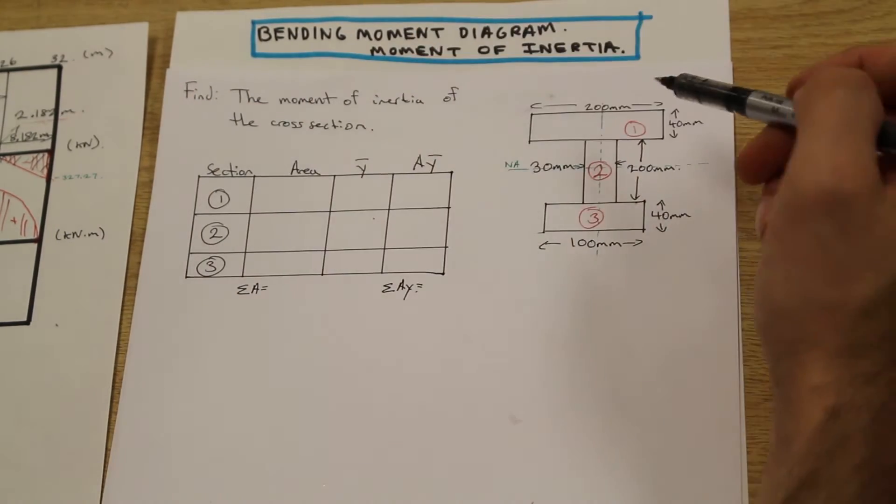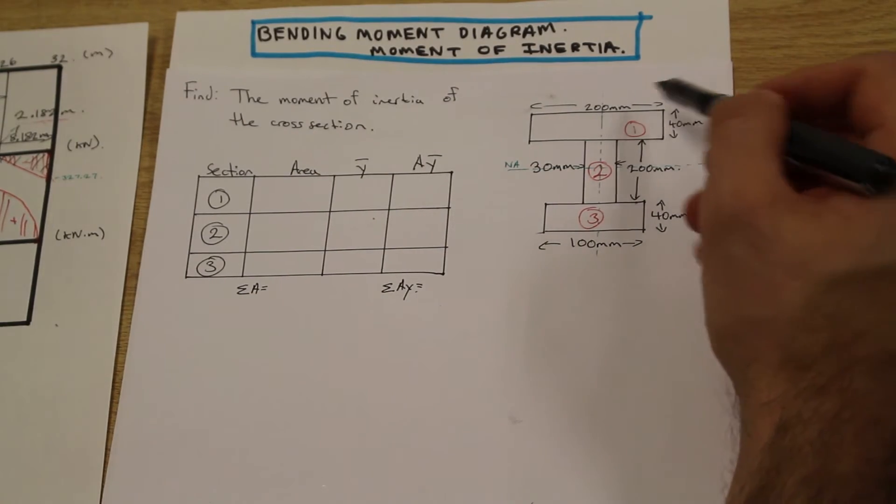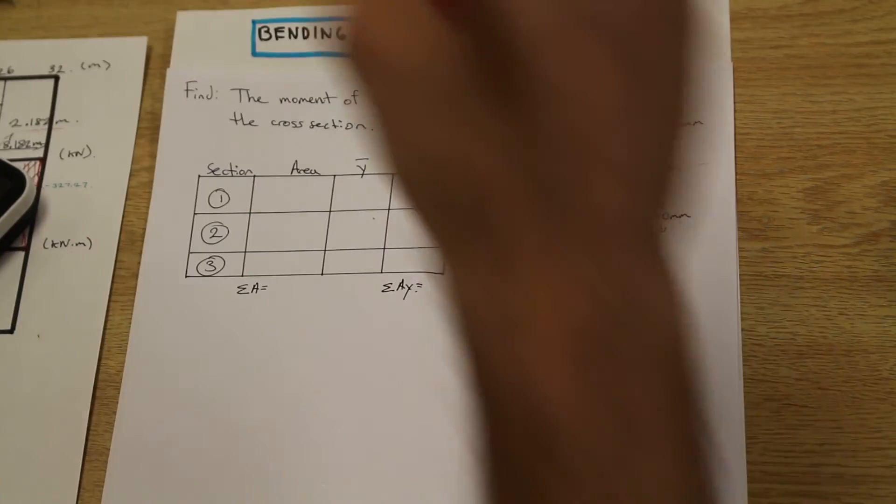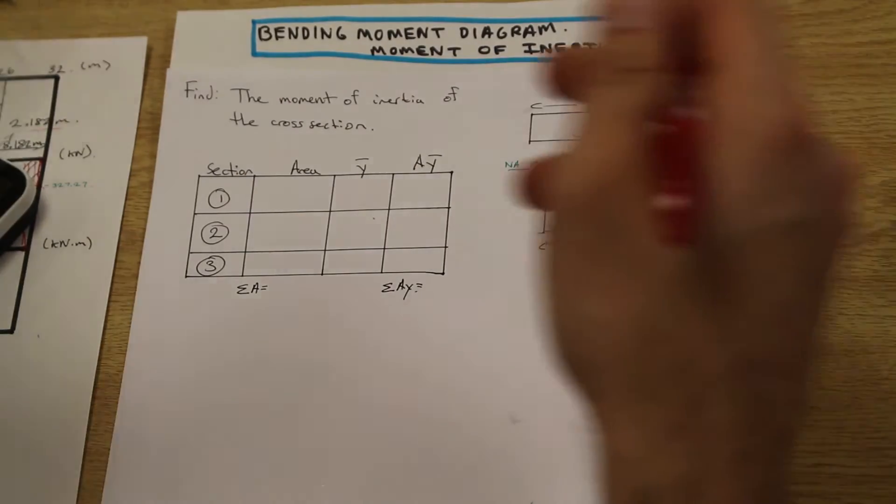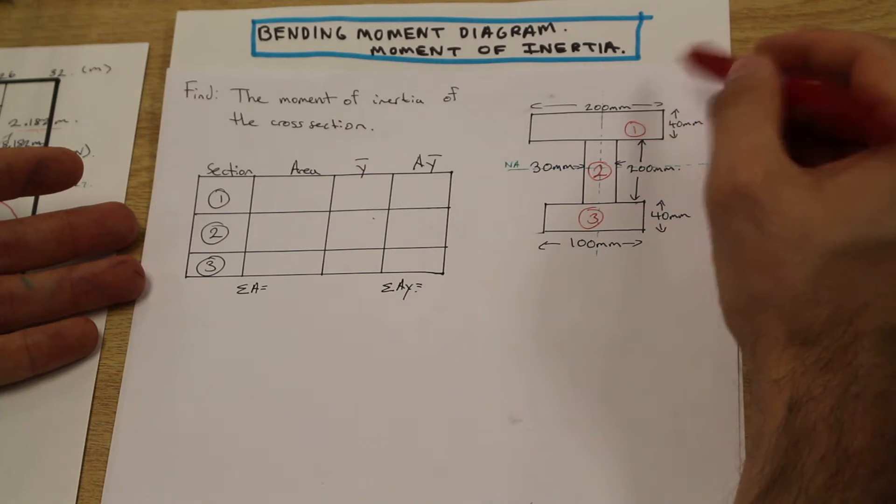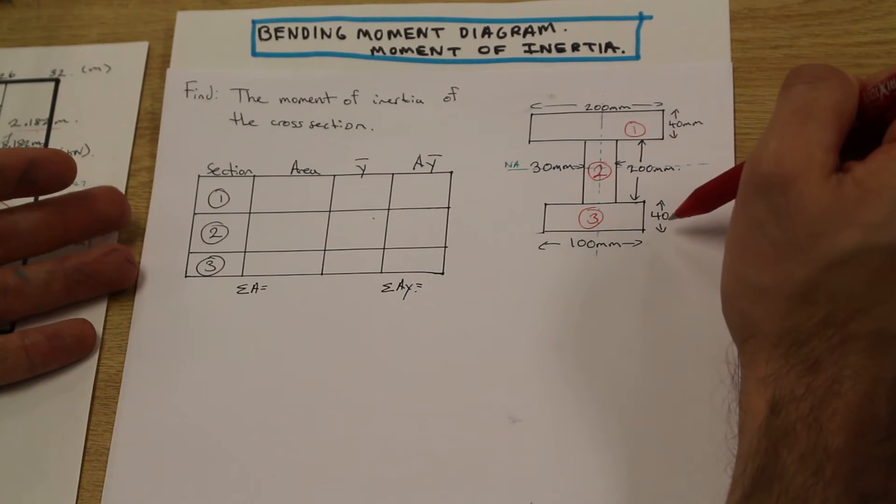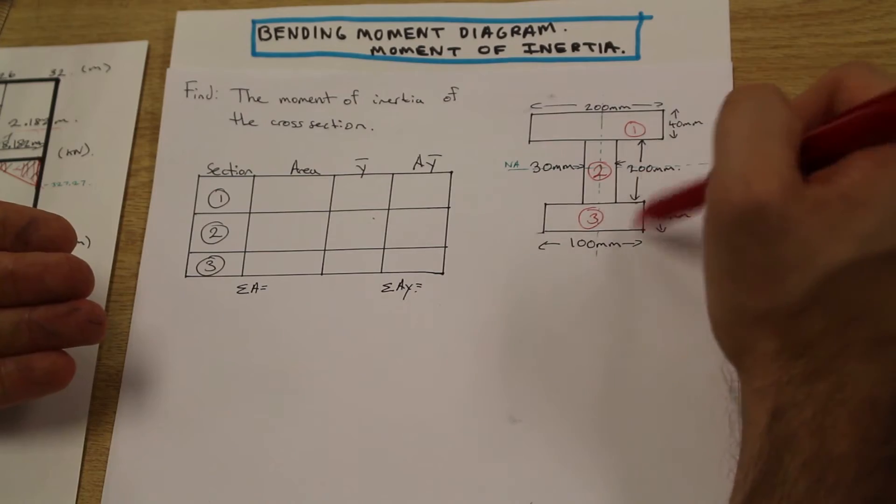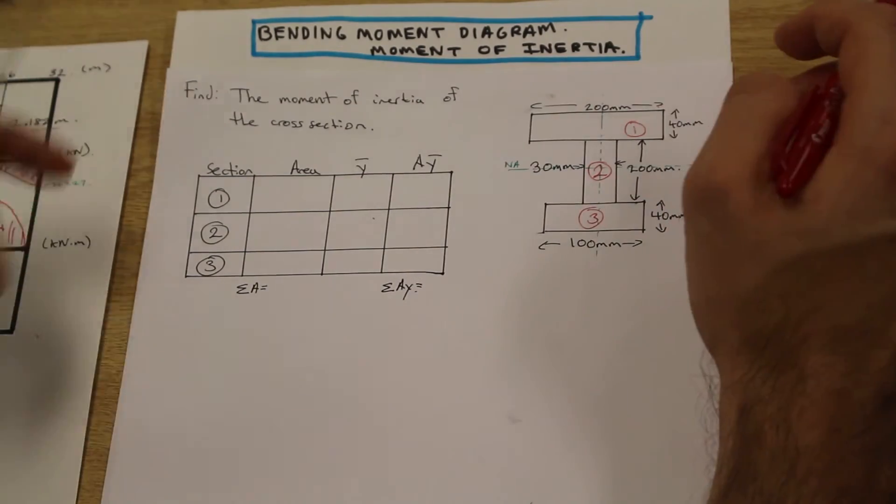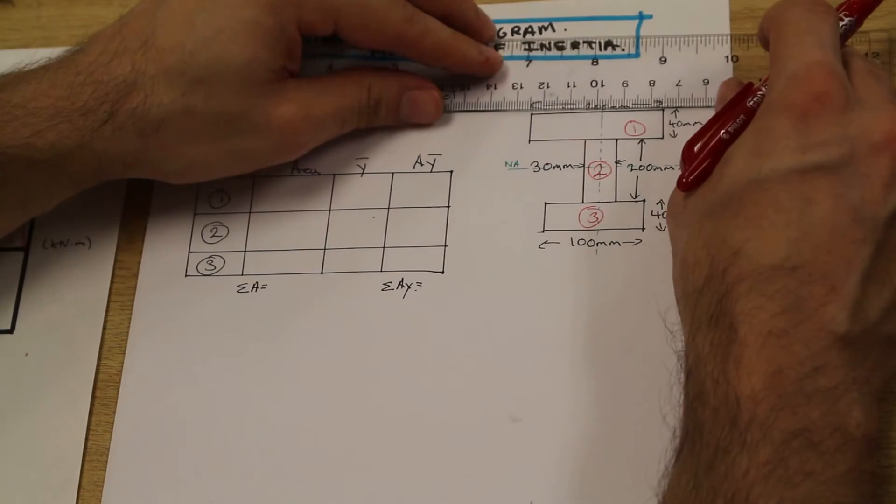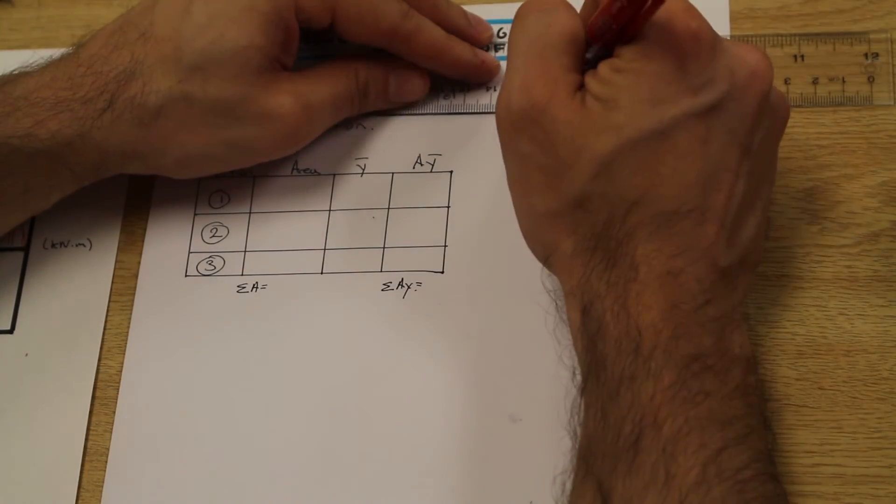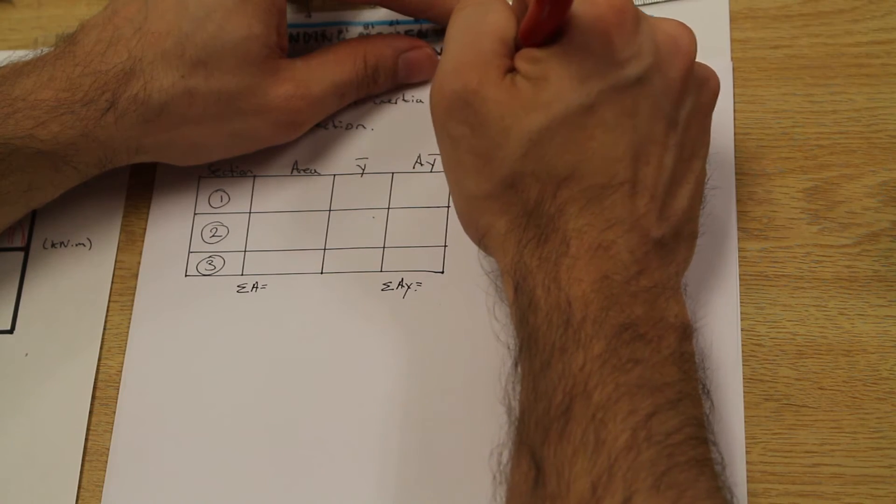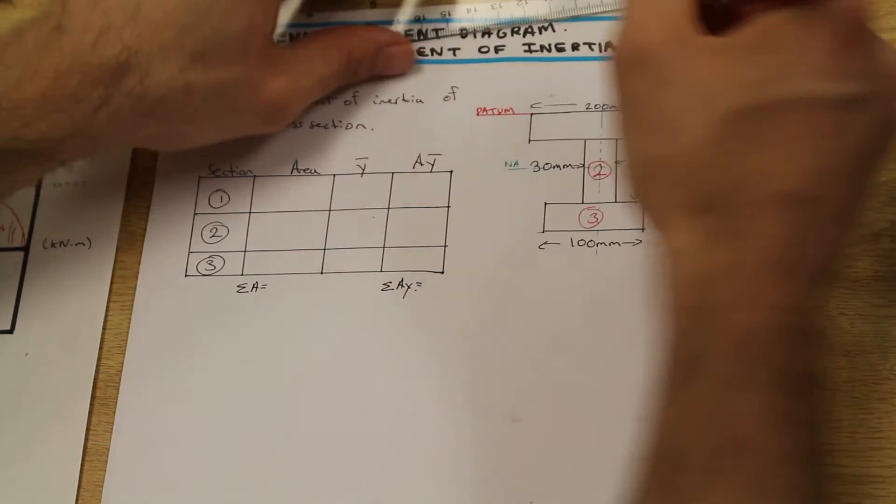We're going to fill out our sections 1, 2, and 3, and we're simply just going to calculate the area of each of the shapes. Before we do that, we need to assign a datum line. So the datum line is a line, it can be on the top or the bottom, and that is the line that we're going to take our measurements from. It doesn't matter if you take it from the top of the bottom; you're going to get the same numbers. For the sake of this question, this is going to be our datum.